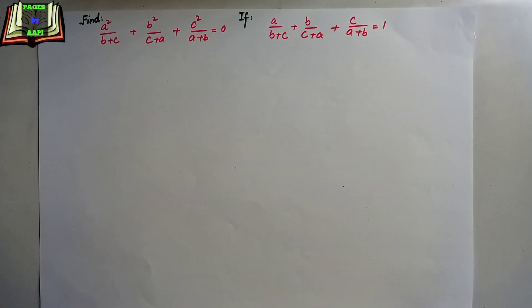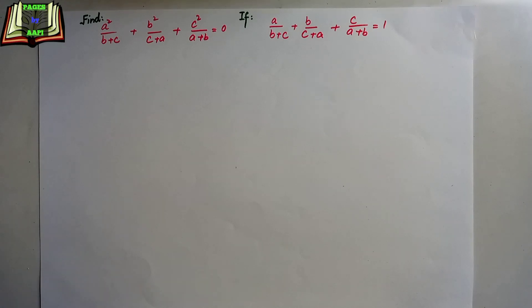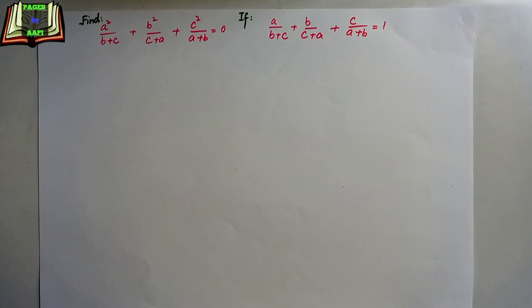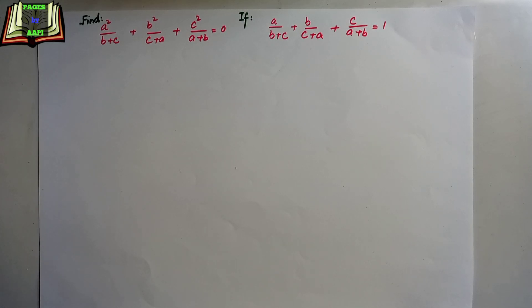The question is: we have to find out a² / (b+c) + b² / (c+a) + c² / (a+b) = 0, given that a/(b+c) + b/(c+a) + c/(a+b) = 1.